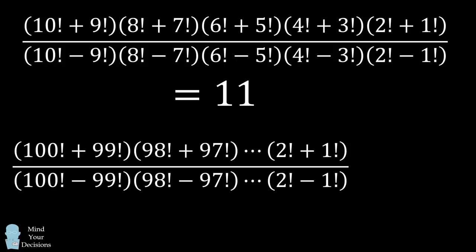Now for the challenge problem where you go up to 100 factorial, I'm not going to go through every single detail. You can follow the same steps and use this approach of cancellation to get that the answer will be 100 plus 1, which is 101.